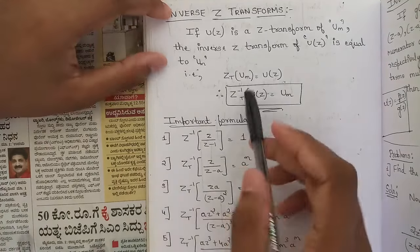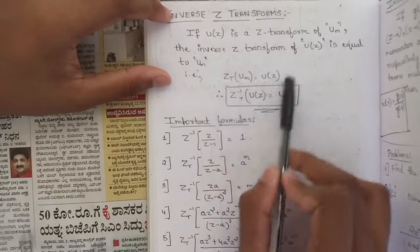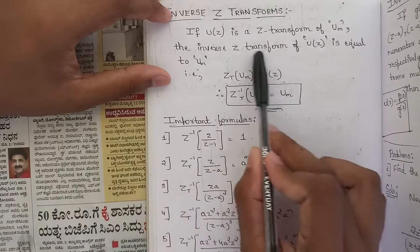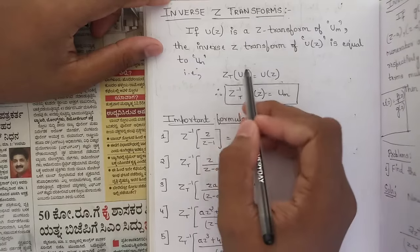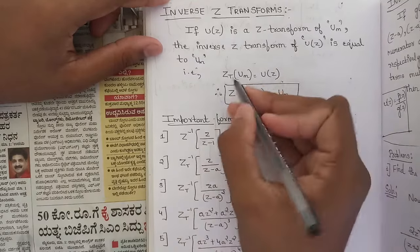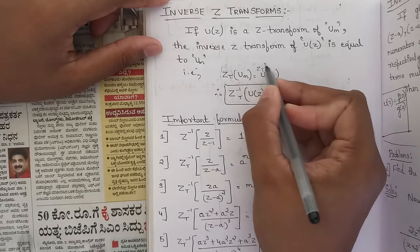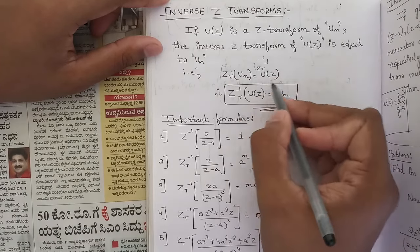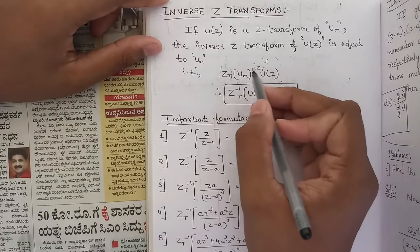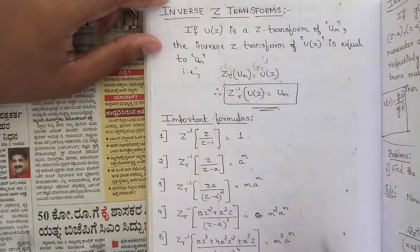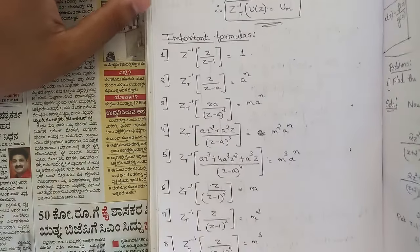So what does this say: if U(z) is the Z-transform of u(n), then the inverse Z-transform of U(z) is equal to u(n). That is, if the Z-transform of u(n) is U(z), then Z-inverse of U(z) equals u(n). Taking this Z-transform to the other side, it directly becomes u(n).